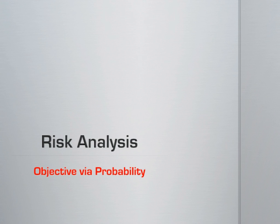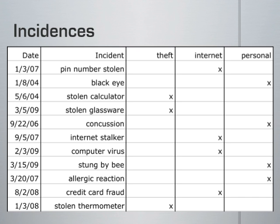Therefore, in this presentation, I will conduct my own personal risk assessment over the last five years using objective probability. These are the most significant security events in my life over the past five years. I tried to choose events that were of equal significance. I listed them by date and then categorized them by security risk types. The categories are theft incidences, internet-related incidences, and personal or bodily harm incidences.